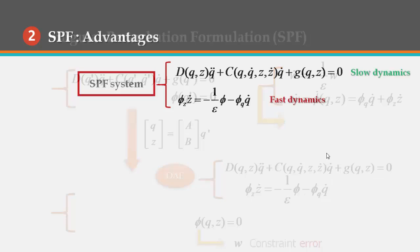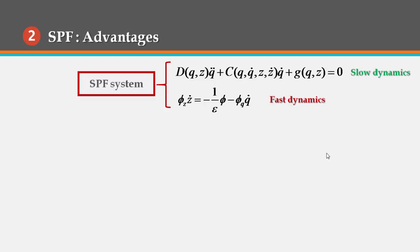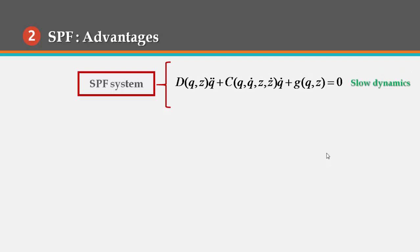The advantages of this formulation are generally in two aspects. The fast dynamics in the constraint error always vanish and dampen rapidly, making the overall singularly perturbed system converge to the slow subsystem.